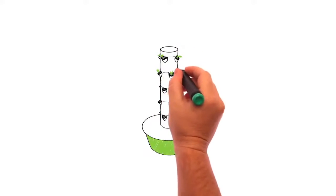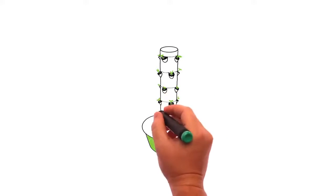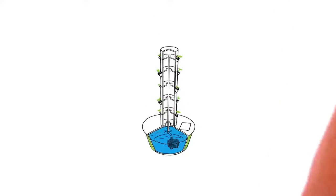The process begins once the seedlings have been placed in your Tower Garden. Here, they will be nourished with Tower Tonic Nutrient Solution. Inside the reservoir is a small, low-wattage, submersible pump. The pump pushes the nutrient solution up through the tower to the top.